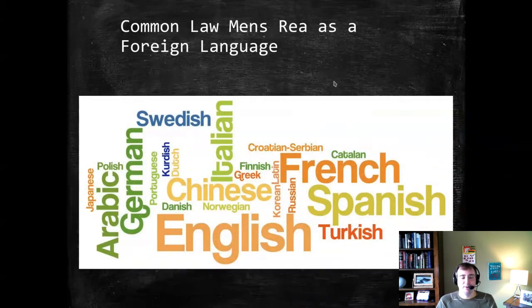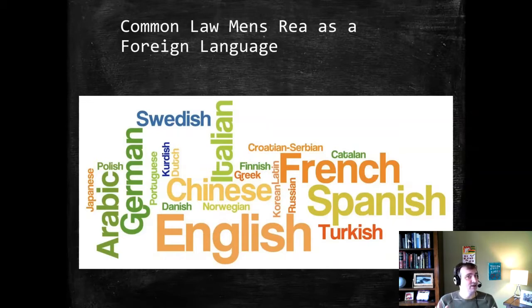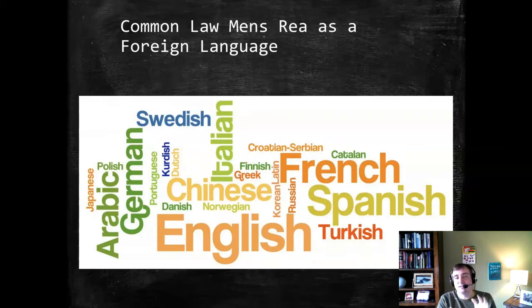When looking at common law mens rea, the specific words used — like knowingly, unlawfully, feloniously, maliciously — are not going to matter in a literal interpretive sense. You can't just find the word, look it up in the dictionary, and get your answer. Treat these words as a foreign language — something you just don't understand and must approach anew. This helps you navigate common law mens rea better and explains why we use categories like general and specific intent rather than just defining words.